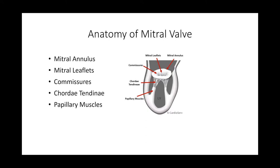To understand the etiology and mechanism of mitral regurgitation, it's very important to understand the anatomy of the mitral valve, because based on that you can explain the etiology and mechanism. The mitral valve apparatus is made of the mitral annulus, anterior and posterior mitral valve leaflets, commissures, chordae tendineae, and the papillary muscles.